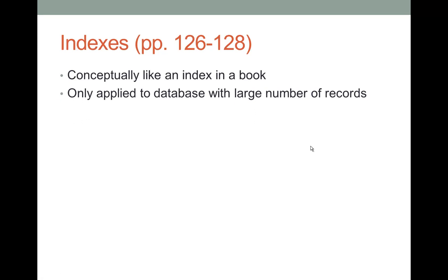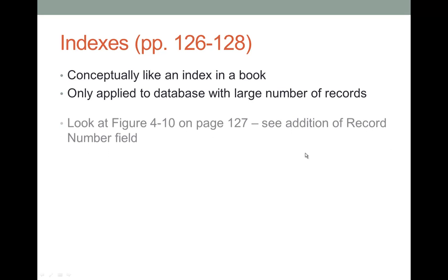Indexes are typically only applied to databases with a large number of records. An index can speed up certain operations but can also slow down others. The real advantages of indexes come into play only on databases with hundreds of thousands — or at least tens of thousands — of records. Applying indexes to small examples with maybe 20 records, as in our largest table, is not something we would normally do.